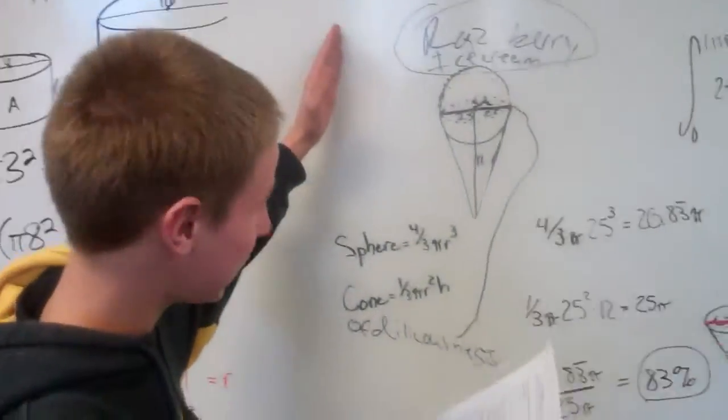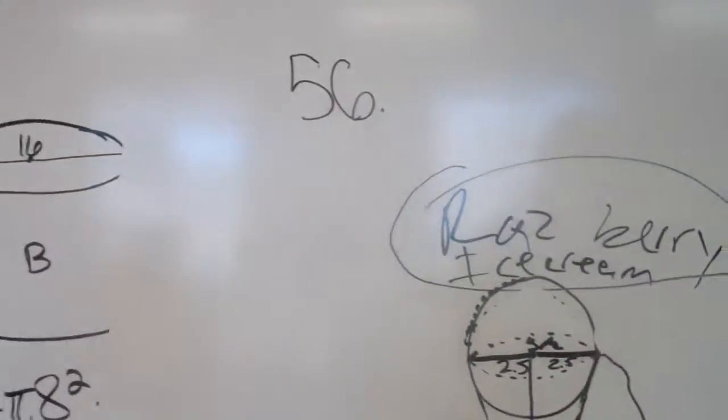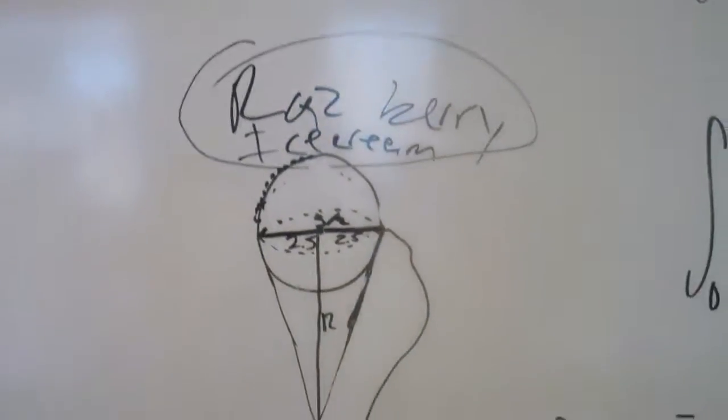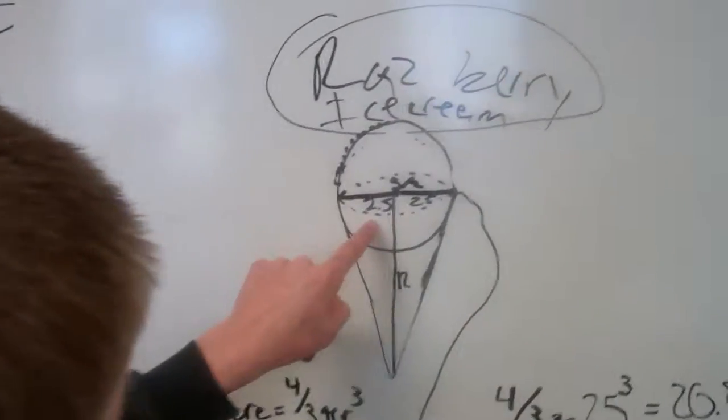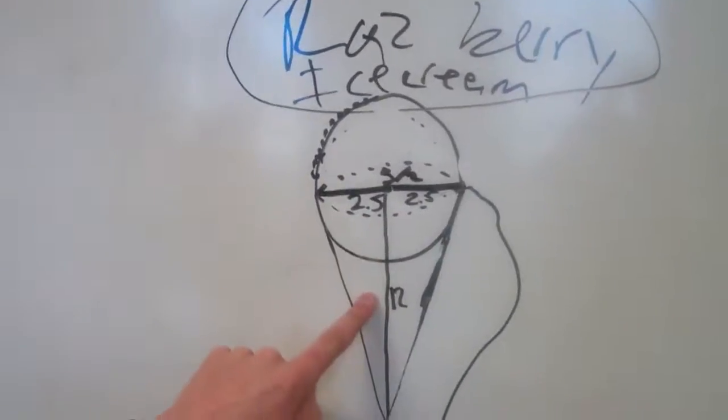All right, so this is problem number 56 and number 21. This question asks, how much of this raspberry ice cream is going to drip into this cone?